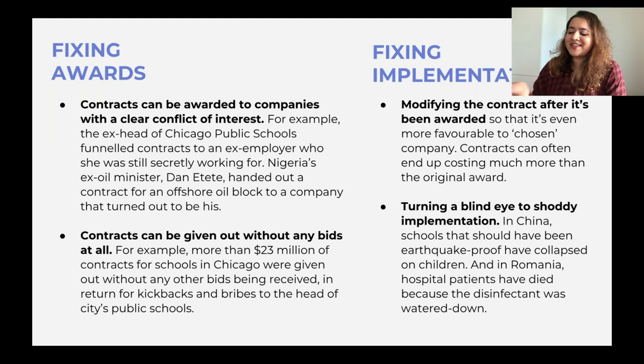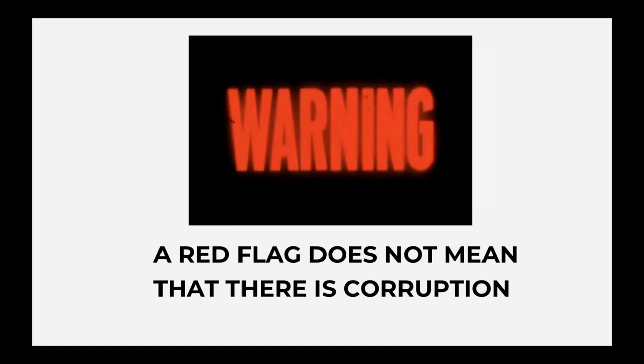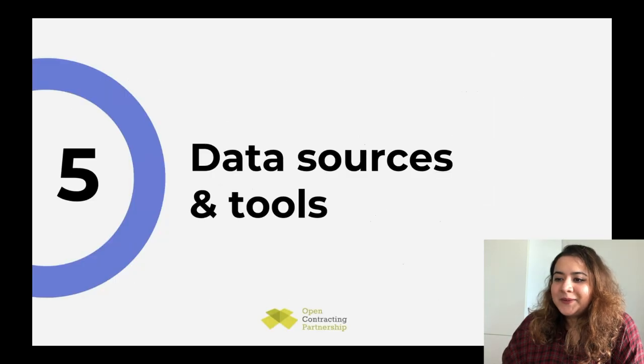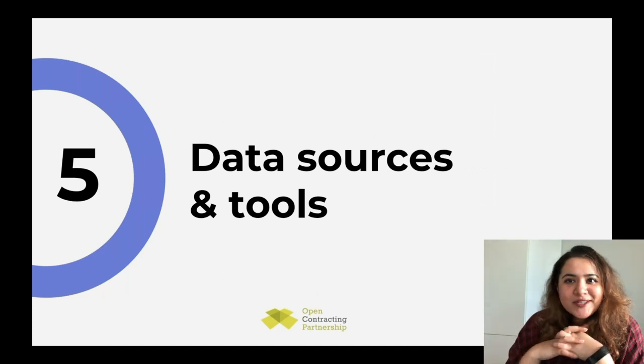A critical warning: a red flag does not mean there is corruption. When data looks suspicious, you start digging and often find it is a misunderstanding, incomplete data, or a legitimate explanation. Red flags are leads for traditional journalism — to investigate further and determine whether they are actual indicators of wrongdoing.